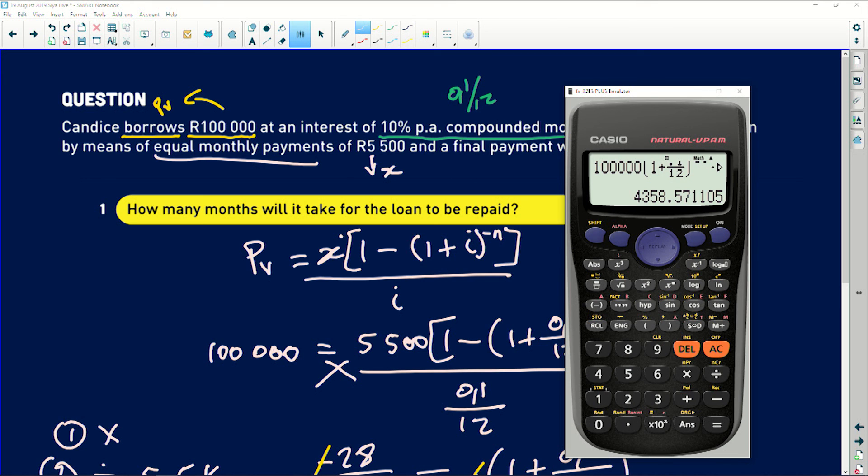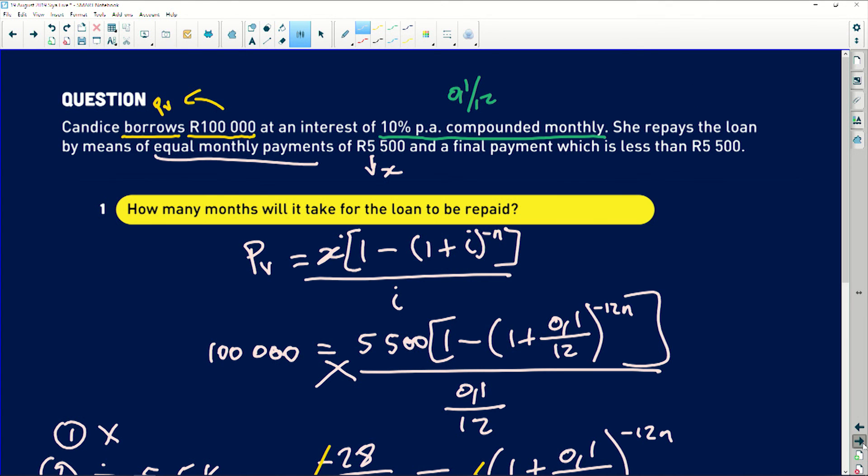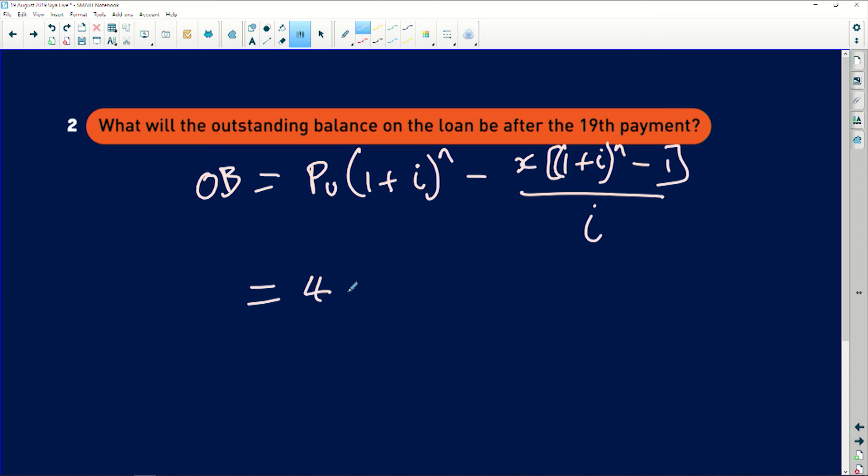The outstanding balance will be R4,358. So it will be R4,358 and 57 cents. So this will be the last amount there that I have.